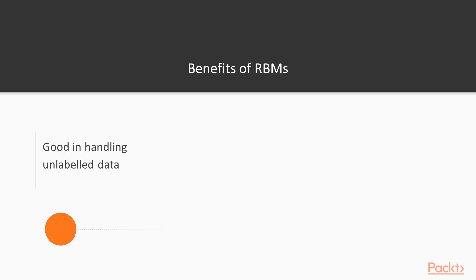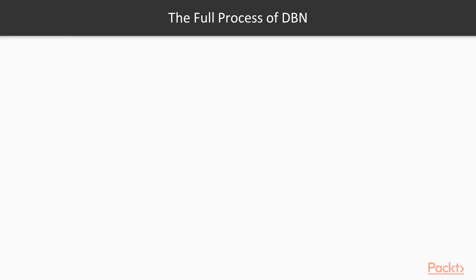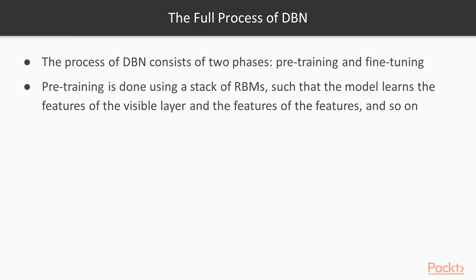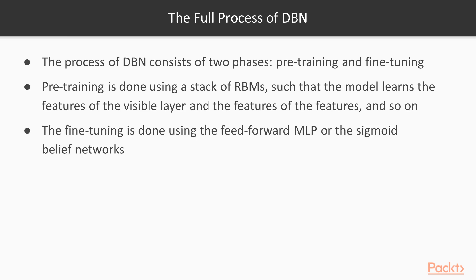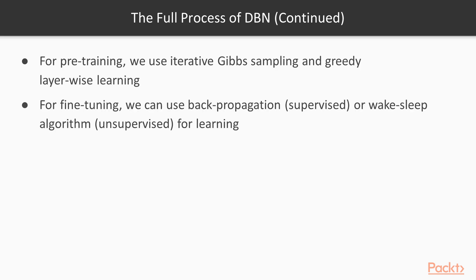The benefits of RBMs include being useful in handling unlabeled data, extracting features from inputs, and being efficient in dimensionality reduction — acting even better than PCA, or principal component analysis. The full process of the DBN consists of two phases: pre-training and fine-tuning. Pre-training is done using a stack of RBMs such that the model learns the features of the visible layer and the features of features, and so on. The fine-tuning phase is done using a feed-forward MLP, or multilayer perceptron, or sigmoid belief networks. For pre-training, we use iterative Gibbs sampling and greedy layer-wise learning. For fine-tuning, we can use backpropagation, which is supervised learning, or the wake-sleep algorithm, which is considered an unsupervised learning method.